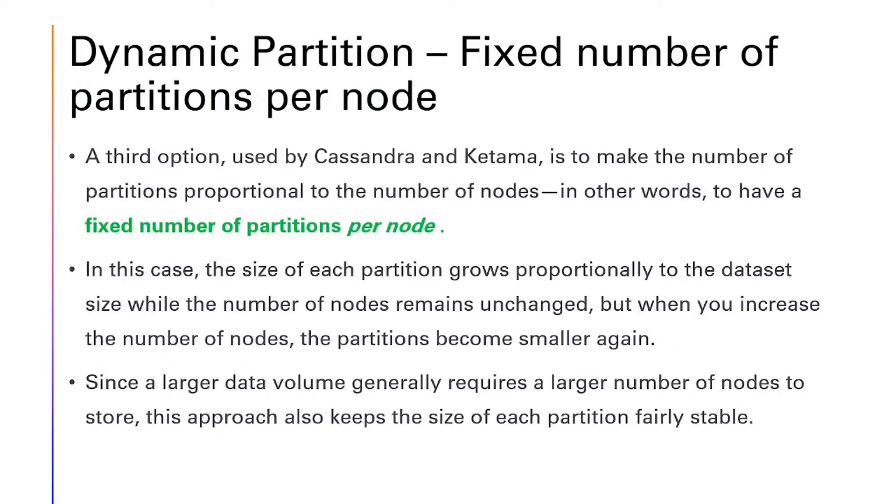Dynamic partition fixed number of partitions per node. A third option, used by Cassandra and Ketama, is to make the number of partitions proportional to the number of nodes, in other words, to a fixed number of partitions per node. In this case, the size of each partition grows proportionally to the dataset size, while the number of nodes remain unchanged.